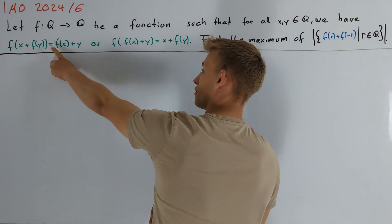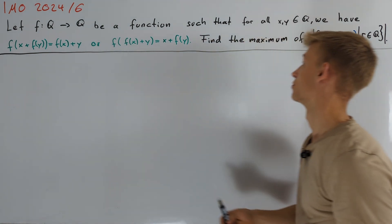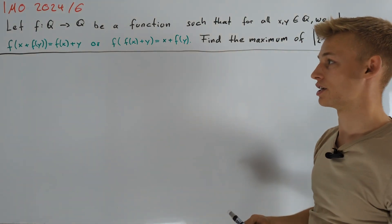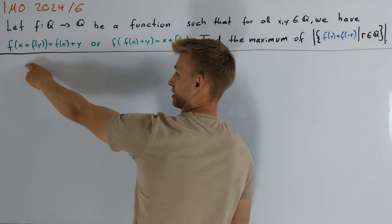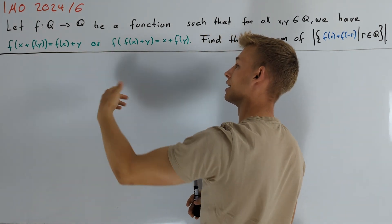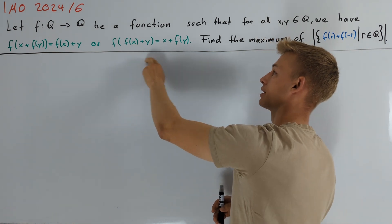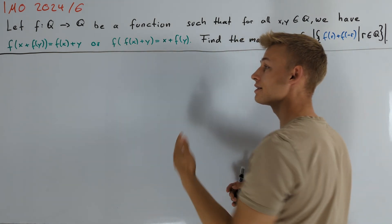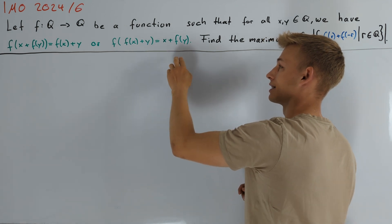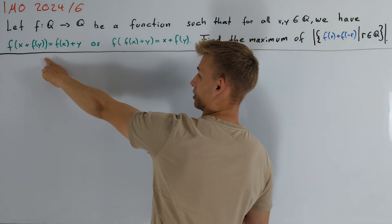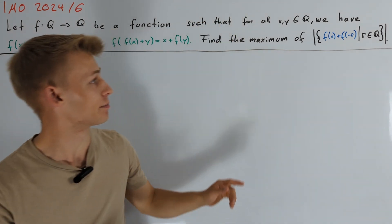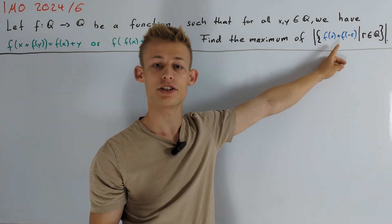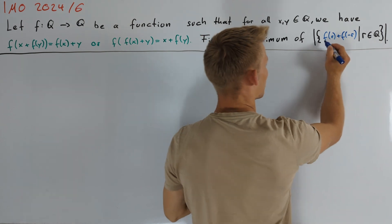We are given a function f from the rational numbers to the rational numbers such that the following is true: if we take arbitrary rational numbers x and y, then at least one of the two equations is true. The first is f(x) + f(y) = f(x+y), and the second is f(f(x)+y) = x + f(y). The problem asks us to find the maximum number of values the expression f(r) + f(-r) can take. For better notation, I want to call this expression g(r).